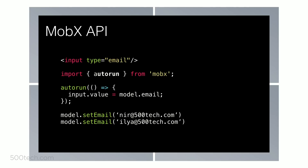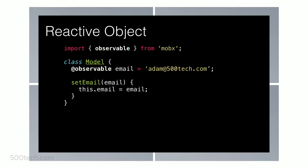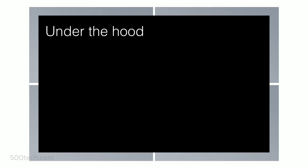In MobX you have a function called Autorun. You basically wrap the side effect — the reaction function — in an Autorun callback, and then it will automatically run whenever it needs to run again. It looks like magic. The one thing needed is to tell MobX which properties to observe, and you do that by decorating your regular object — no crazy immutable data, reducers, or middlewares. You just add a decorator called Observable to the property. MobX then wraps that property with a getter and a setter function, so it knows exactly when you access or change that property.